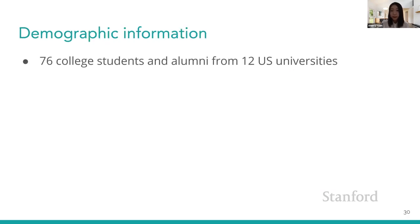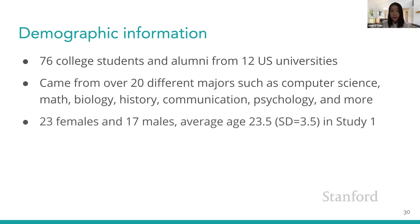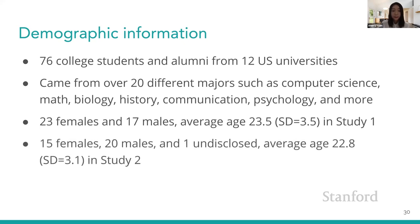We recruited 76 college students and alumni from 12 different U.S. universities including Stanford, from over 20 different majors. In the first study, we had 23 female and 17 male students with an average age of 23.5 years old. In the second study, we had 15 females, 20 males, and one who chose not to disclose, with an average age of 22.8 years old.